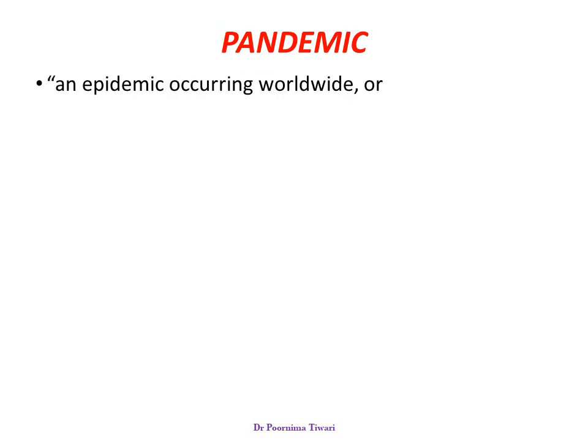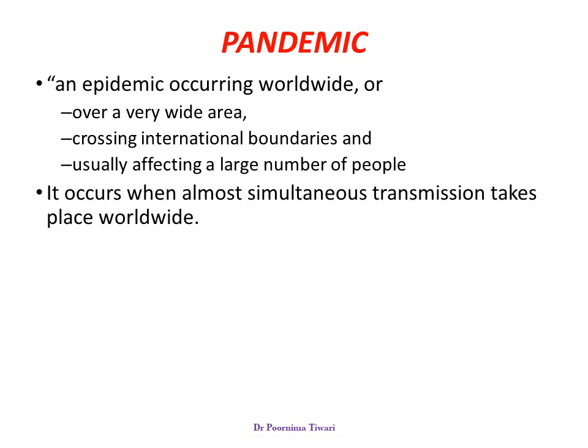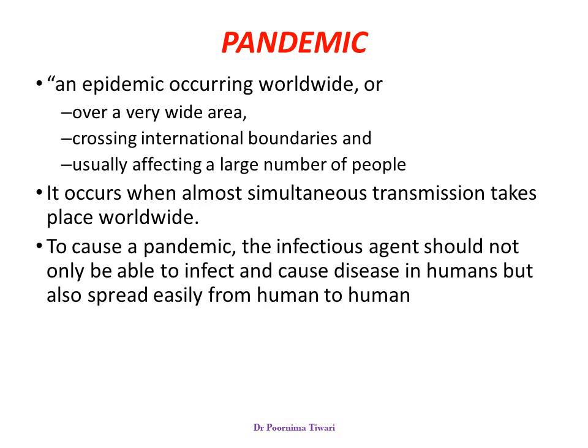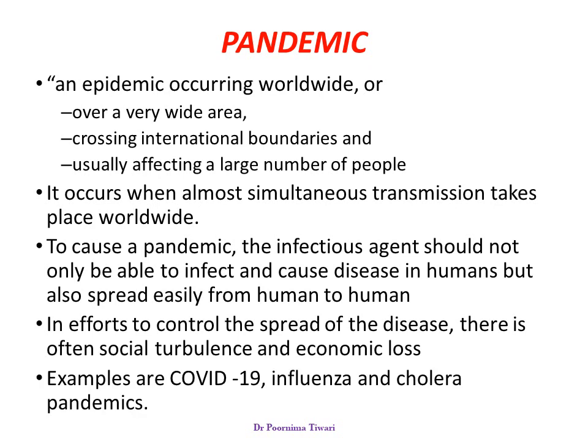A pandemic is an epidemic which occurs worldwide, or at least over a very wide area on the globe, crossing international boundaries and usually affecting a large number of people. A pandemic occurs when simultaneous transmission occurs throughout the world. An infectious agent can cause a pandemic when it is able to infect and cause disease in humans and is also able to spread easily from human to human. In the efforts to control the spread of such a pandemic, there is often social turbulence and huge economic losses. Examples include the recent COVID-19 and previous pandemics of influenza and cholera.